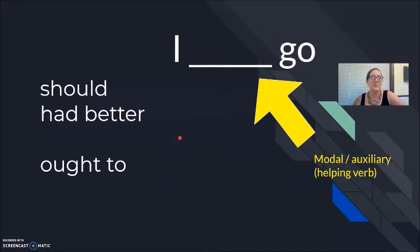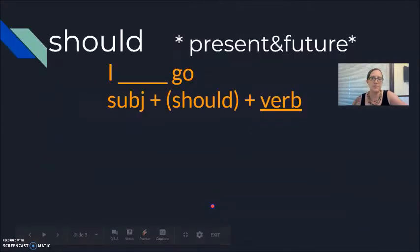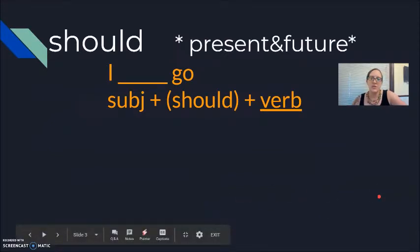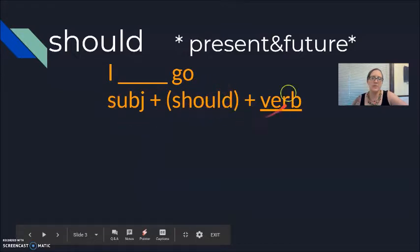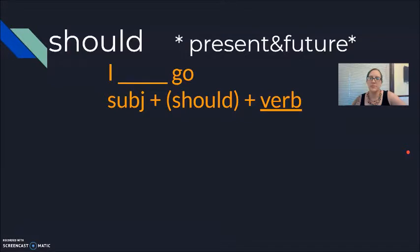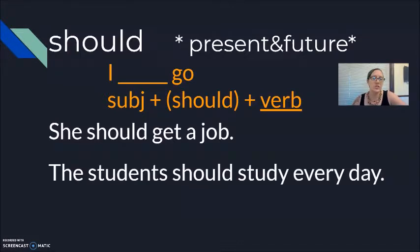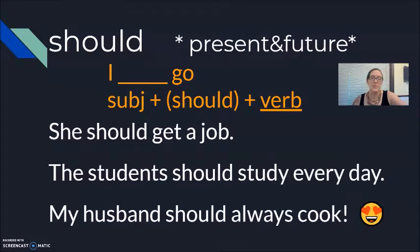However, a grammar book will tell you that 'had better' is closer to 'should.' All three go into this position of subject, modal, infinitive or unchanged verb. When we think about 'should,' remember it can be used for the present — right now — and for the future. It can also be put into the past using the perfect tense, but don't think about that quite yet. Examples: She should get a job. The students should study every day. My husband should always cook.